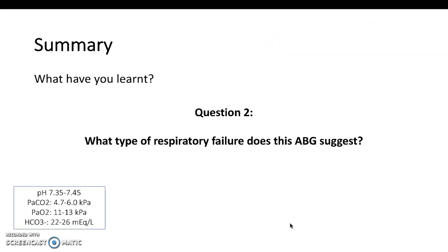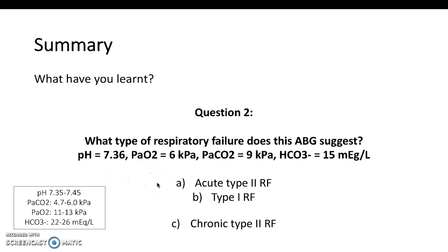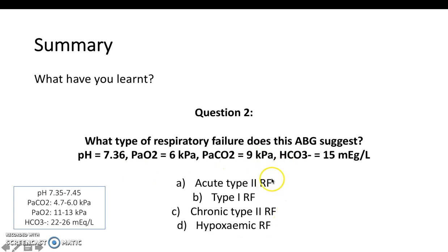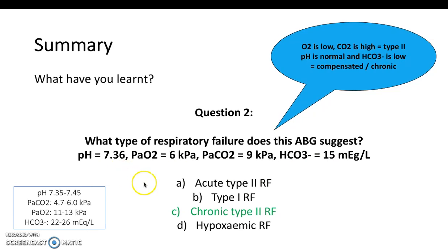Now an ABG interpretation question — pause to compare the results shown to normal values. Breaking it down: the options are type 1, or type 2 acute versus chronic. The oxygen is low and the carbon dioxide is high — a typical type 2 picture. However, the pH is just about normal and the bicarbonate is low, suggesting a compensated picture where the body has had time to restore pH to normal. The answer is chronic type 2 respiratory failure.